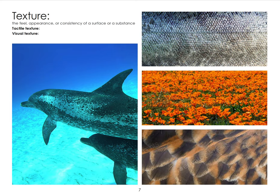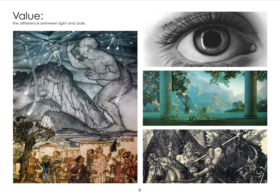Lastly, value — a student once asked and didn't realize value also incorporates color. It's defined as the difference between light and dark. Light and dark can really push your composition: dark in the foreground with brightness in the background makes the viewer look beyond to the background. High-value warm colors grab the eye; cold colors tend to sit back.